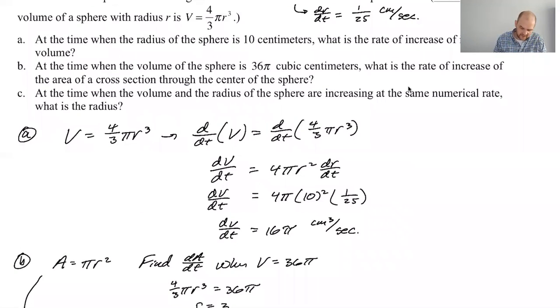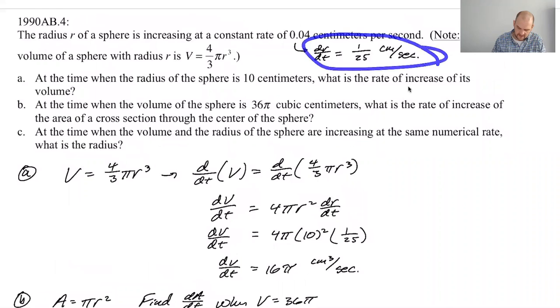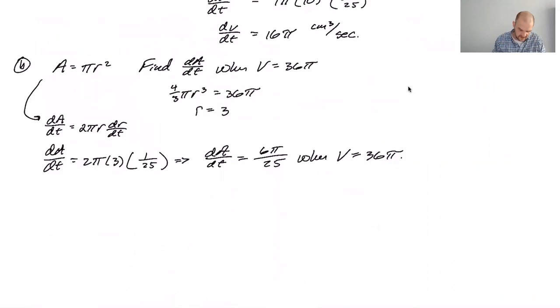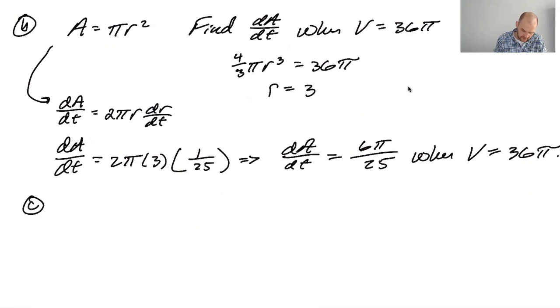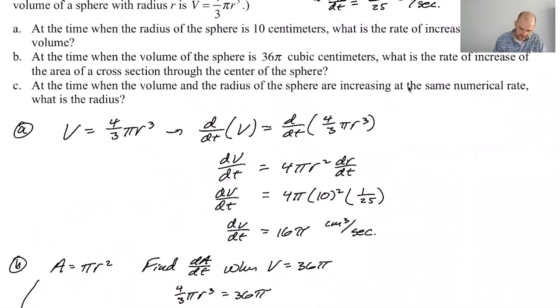All right, at the time when the volume and radius are increasing at the same numerical, okay, so dV/dt will equal dr/dt. And they're both going to be this, I guess. It probably isn't relevant, it'll probably cancel itself out. So, find r, basically we want to find r when, that's supposed to say when, when dr/dt equals dV/dt. My v's and r's are dangerously close to each other. At the time when the volume and radius are increasing at the same numerical rate, what is the radius? Okay.